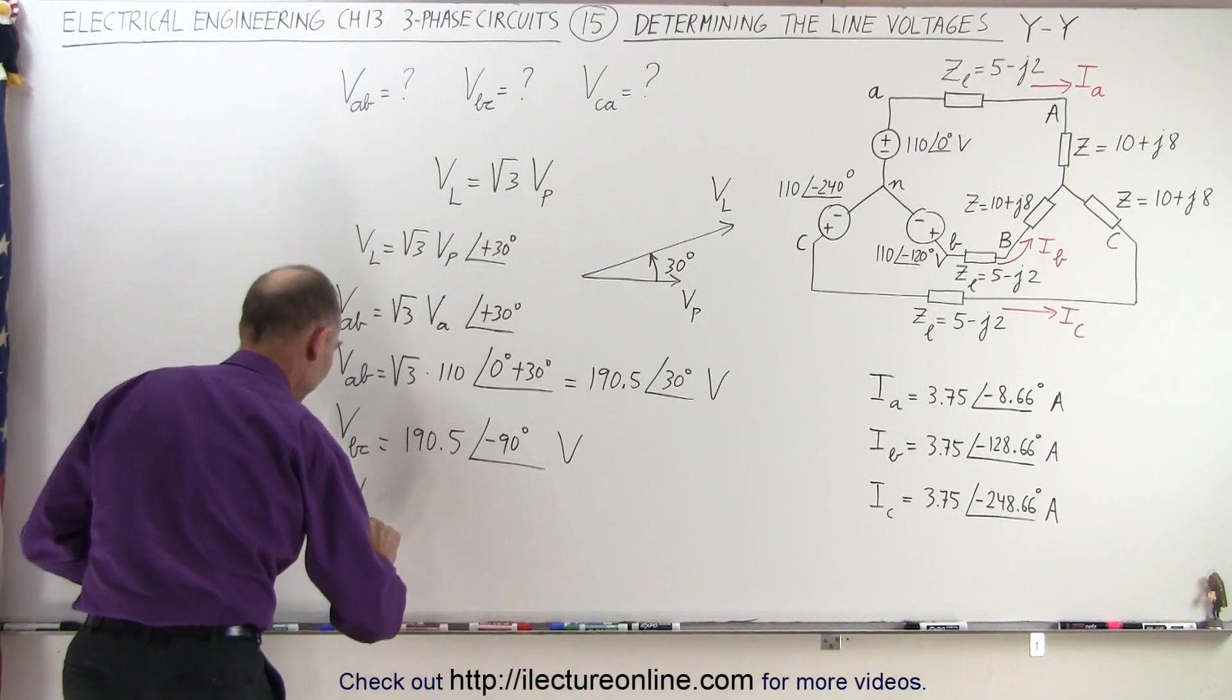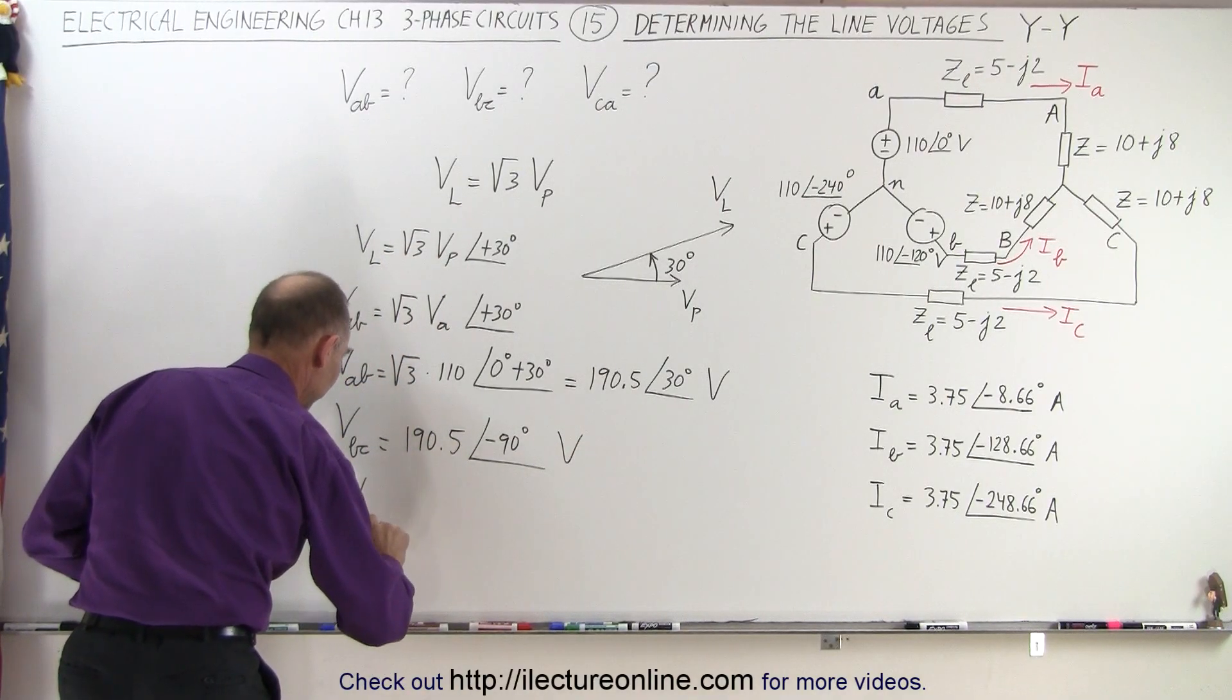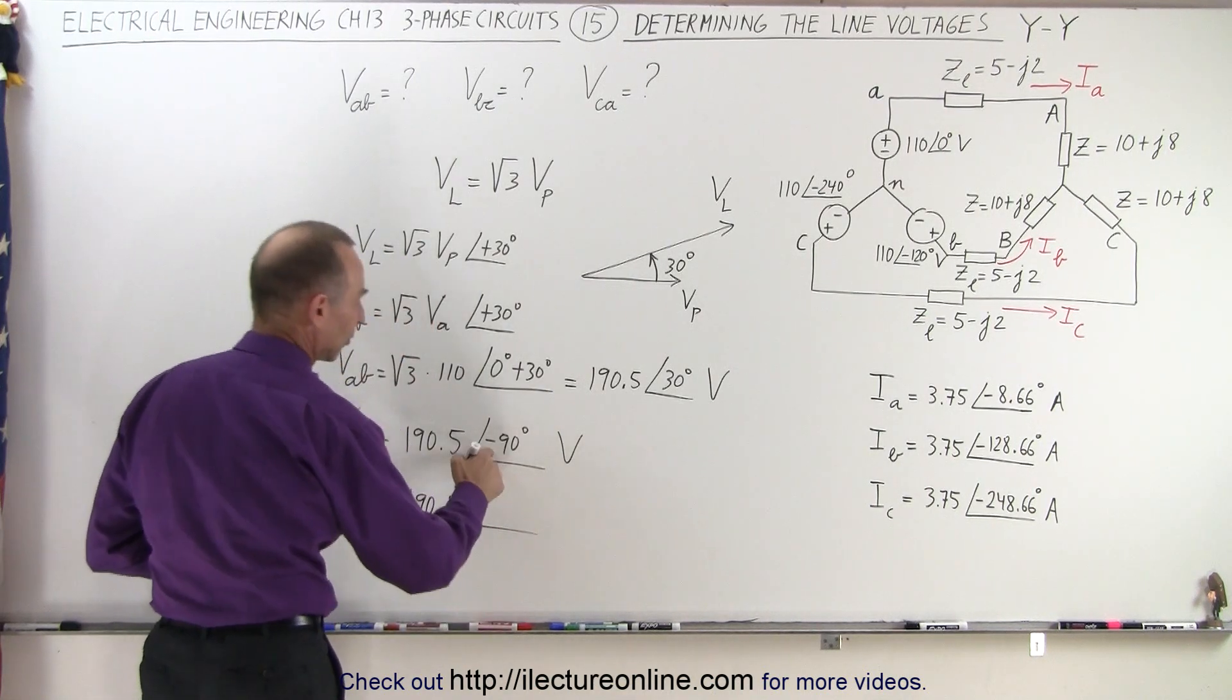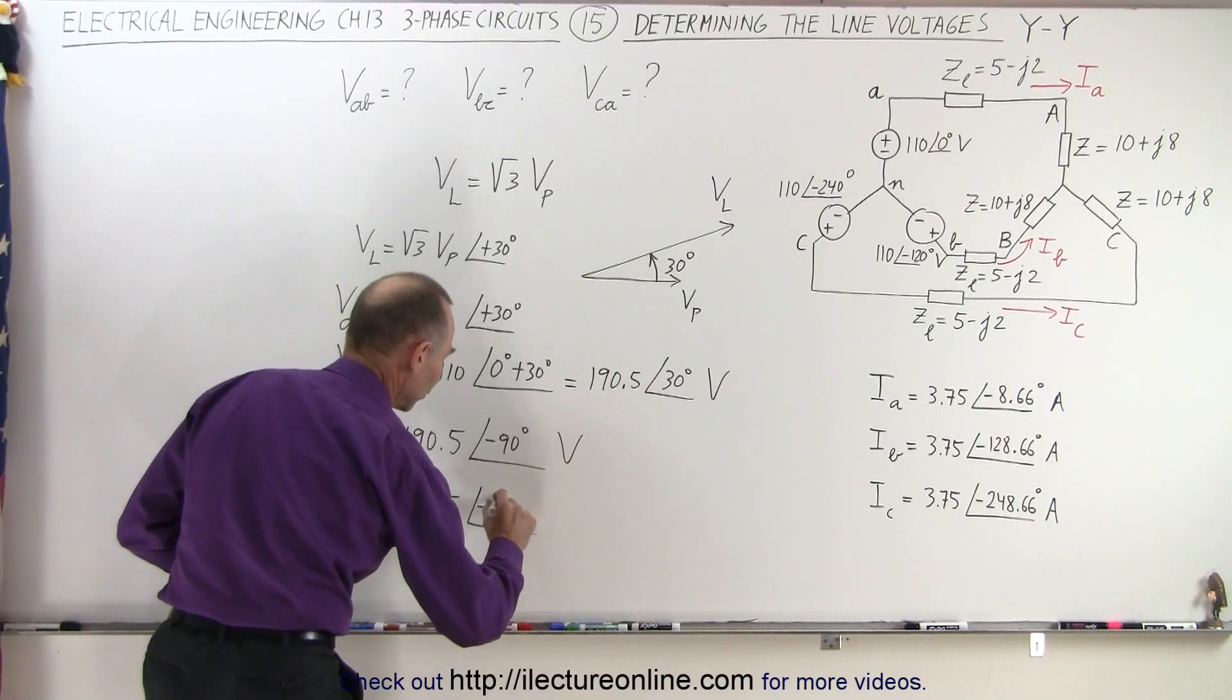And then we want to find the line voltage from C back to A. That's equal to 190.5 with a phase angle. Again, subtract 120 from that. That's minus 210.